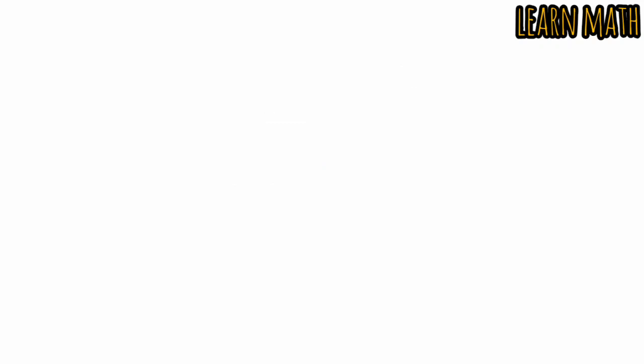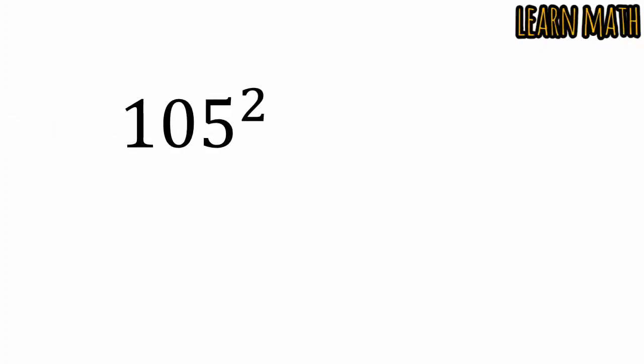Look at the third example. Suppose we want to calculate the square of 105. The first step, 5 square is 25.